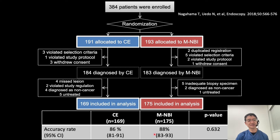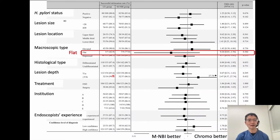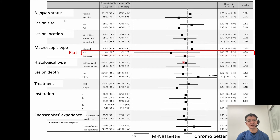Diagnostic accuracy must be better than white light endoscopy, but between the two endoscopic diagnostic methods, we could not find a statistically significant difference. Subset analysis shows no significant benefit of magnifying NBI over chromoendoscopy for specific subgroups, but for flat lesions, magnifying NBI tended to be more accurate compared to chromoendoscopy. However, this did not impact overall endoscopic accuracy improvement.